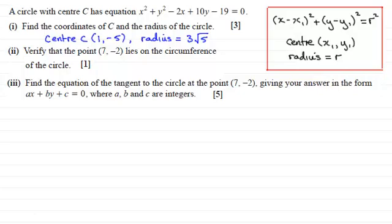OK, welcome back then if you had a go. Now the answer to this problem is that the equation of the tangent is 2x plus y minus 12 equals 0. Now if you didn't get this result, what I'll do is I'll take you through the solution.